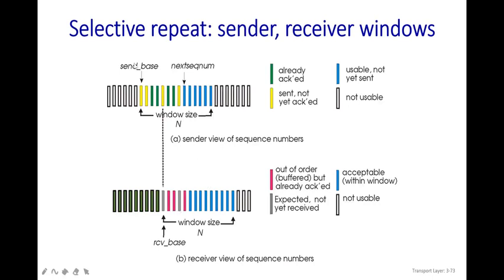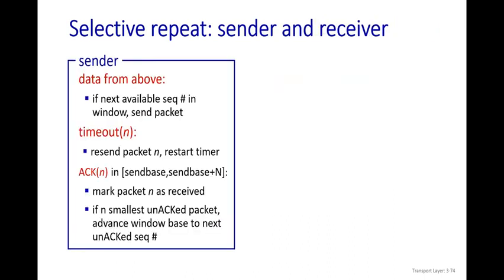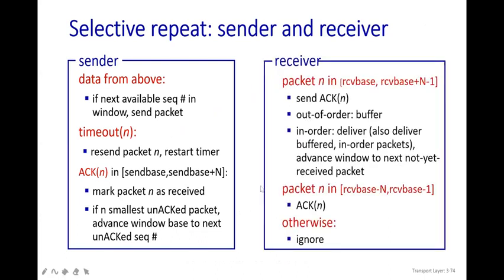In Selective Repeat, even out-of-order packets are not discarded — they are kept in the buffer and individually acknowledged. They can be re-utilized later to deliver everything to the upper layer in order. The blue-colored packets in the sequence window are all acceptable. Now let's see how the sender and receiver sides work in Selective Repeat.